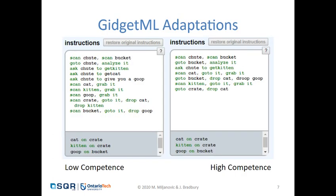Some of our adaptations in GidgetML include modifying the amount of energy a player has to complete a level, as well as changing the starter code that is present. In this example, those on the left in the low-competence category are given more of the correct code, while those on the right in the high-competence category have typos and other errors that need to be fixed — more errors than those in the low-competence group.